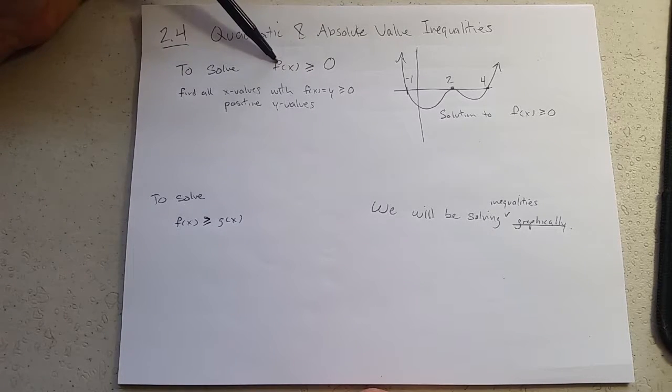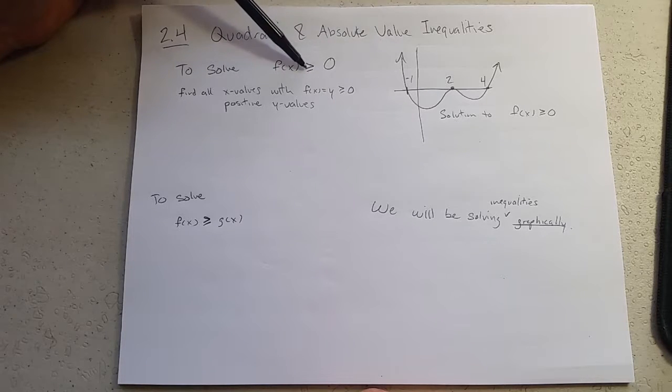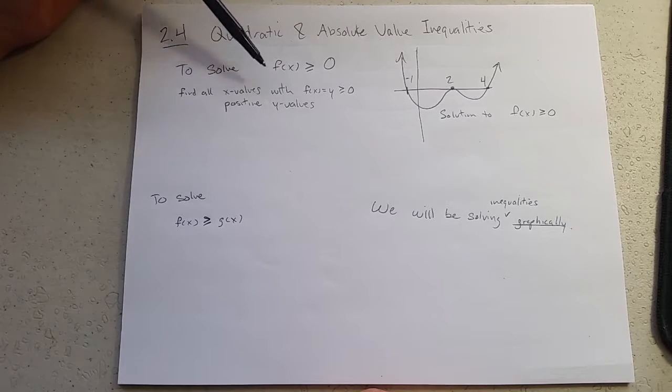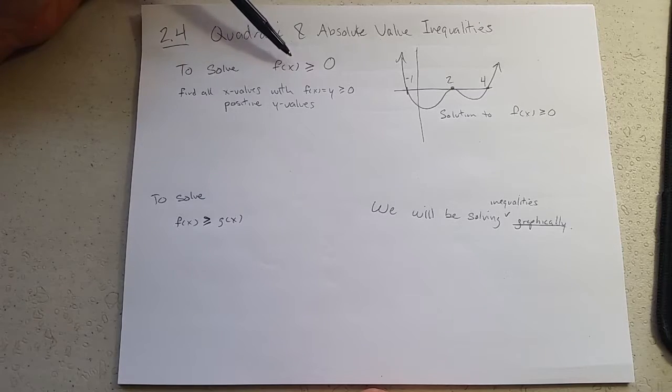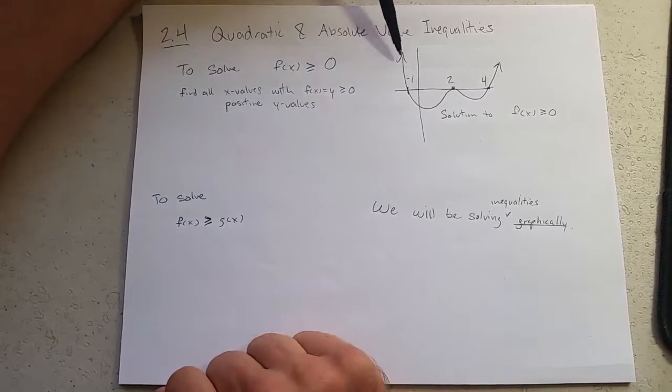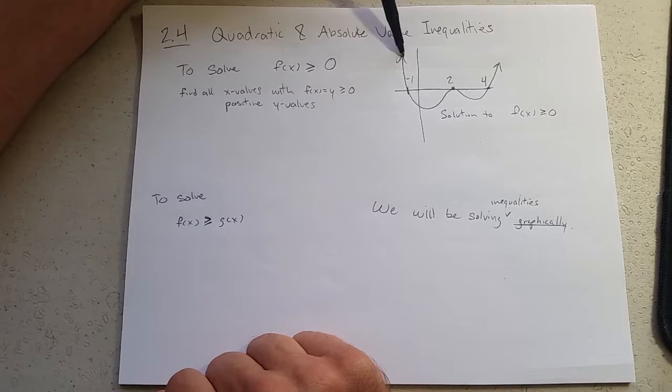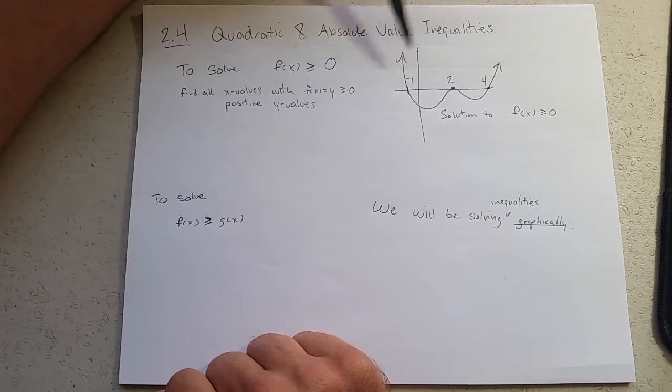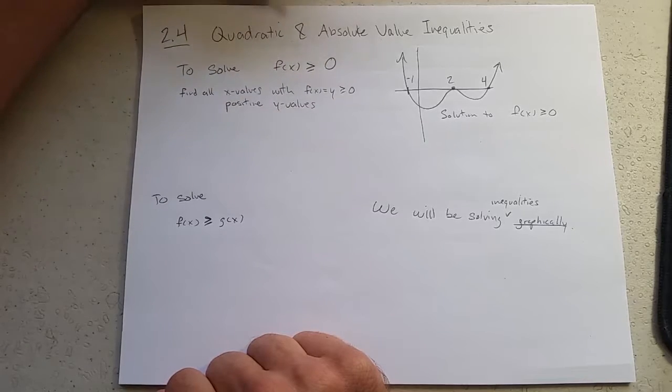So we're first going to start with f of x is greater than or equal to 0. We want to solve this. So what is f of x? f of x is the y values. If we have a graph of the function, all we have to do is figure out what parts of the graph have a y value that is greater than or equal to 0.